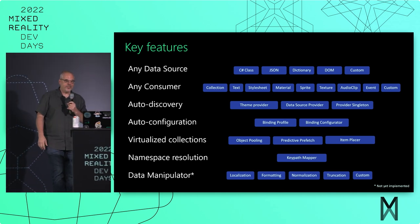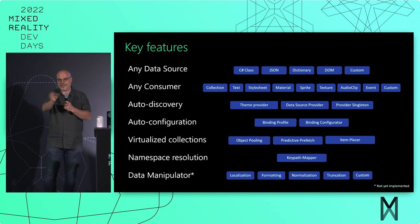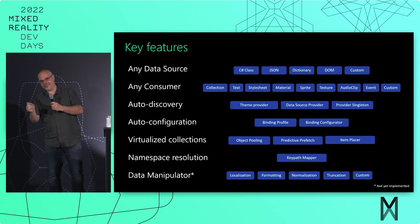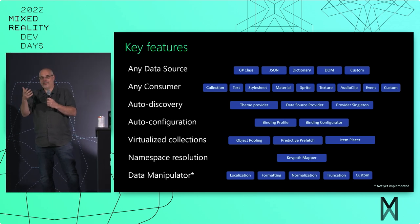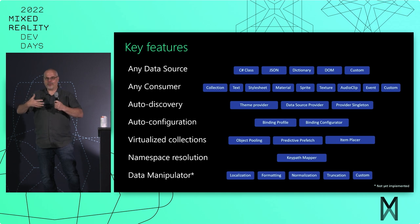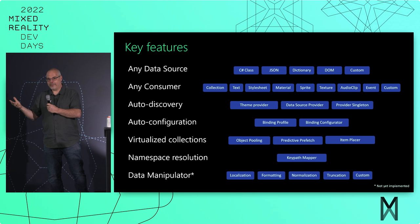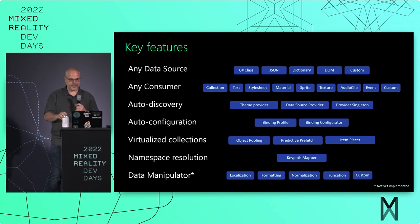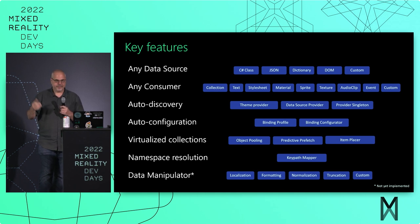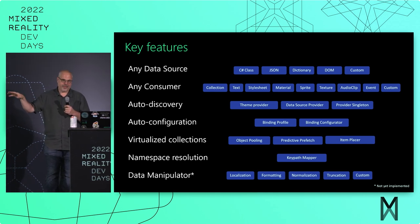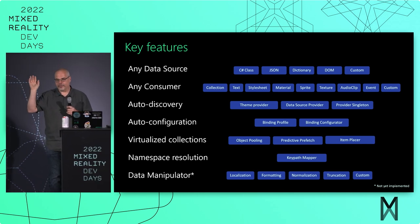Namespace resolution: if you have a data source with its own namespaces you have no control over — like first_name, last_name — but you want to create prefabs that are generalized like a contact list prefab using fname and lname, something has to map those two. There's a thing called a key path mapper that will say if the name in the prefab is one thing, automatically map it to what's coming in from the data source. We also have data manipulators: localization formatting — make it look like a currency or a date — normalization, like putting ellipses on text or changing the range of a value. You can create your own in this pipeline and there can be as many as you want between the data source and any data consumer.